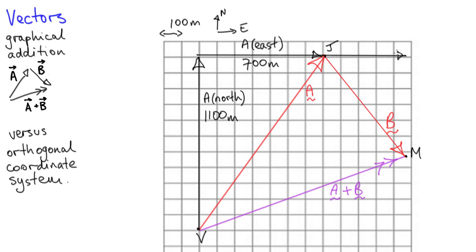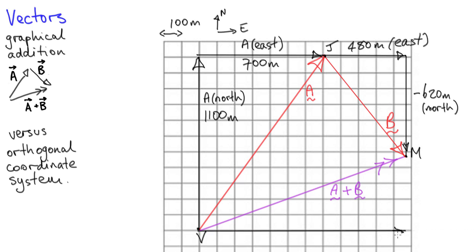Now the vector B points south-east, so it has a negative displacement in the north direction. Let's say it's negative 620 meters north plus 480 meters east. Then if we look at the purple vector, we can count out the squares and see it's 480 meters to the north and 1180 meters to the east.